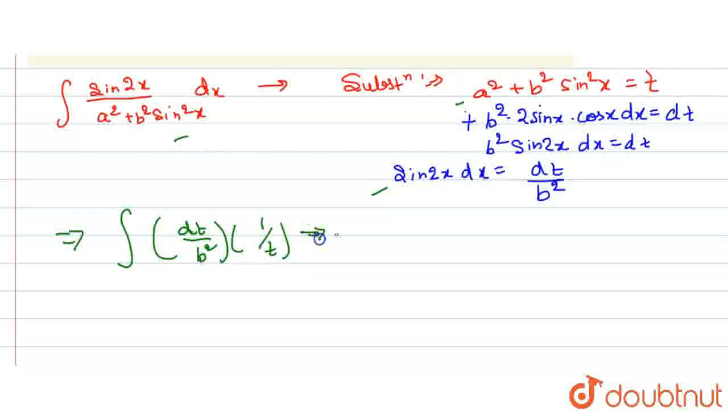Which can be written as 1 by b squared, which is a constant term taken out, and this will be 1 by t into dt. We know that integral of 1 by t is equal to log t plus c as the constant of integration.